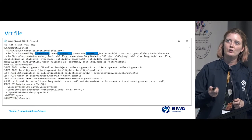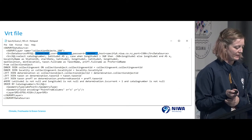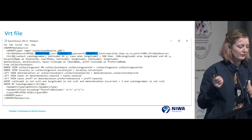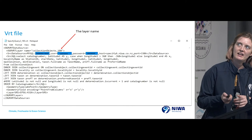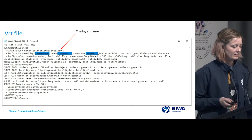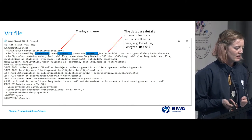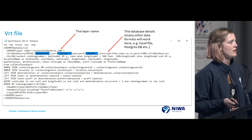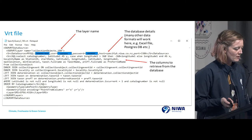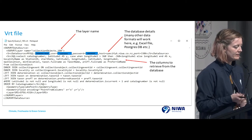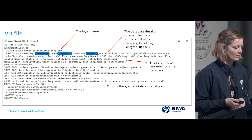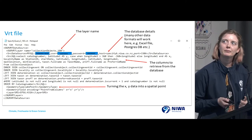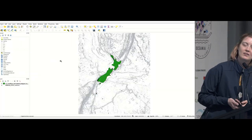The file can be opened as a layer and you can use it in QGIS like any other layer. Going through the file quickly: this is what the layer name will be called in QGIS, there are the database details — you can also use it with a Postgres database or an Excel file — the columns we want out of our database are listed there, then how we're going to turn that into a spatial point, and the spatial reference system.